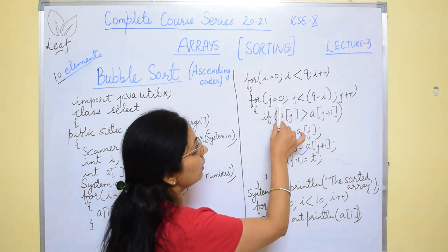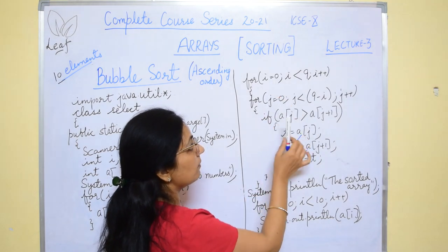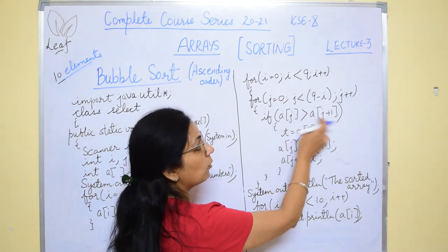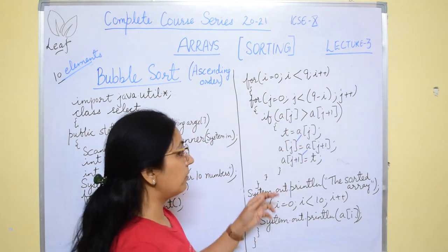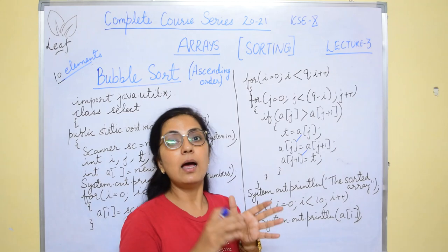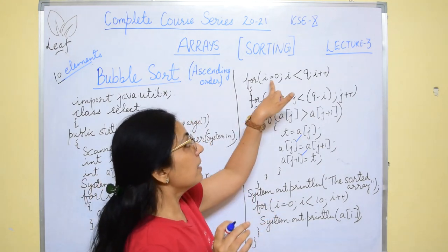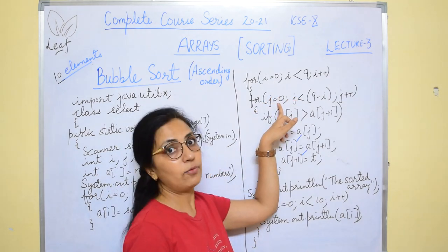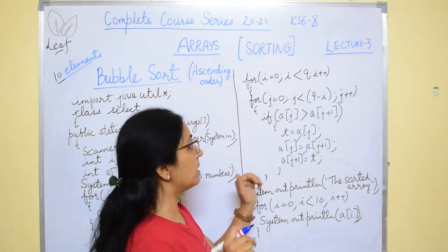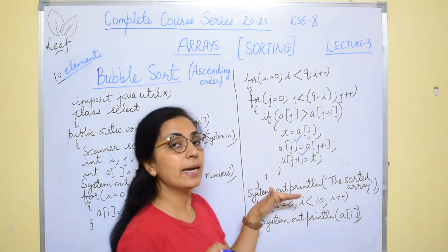This is how we are doing it: j and j+1. First time when the value of i is 0, j starts from 0: comparing 0-1, then 1-2, 2-3, 3-4, 4-5, like this the comparison will be done. After completion of the entire loop once, you get the highest element in ascending order in the last subscript. Then when i is 1, j starts again from 0: comparing 0-1, 1-2, 2-3, 3-4, like this the comparison will take place, and the entire comparison will be done, and we will get the sorted array.